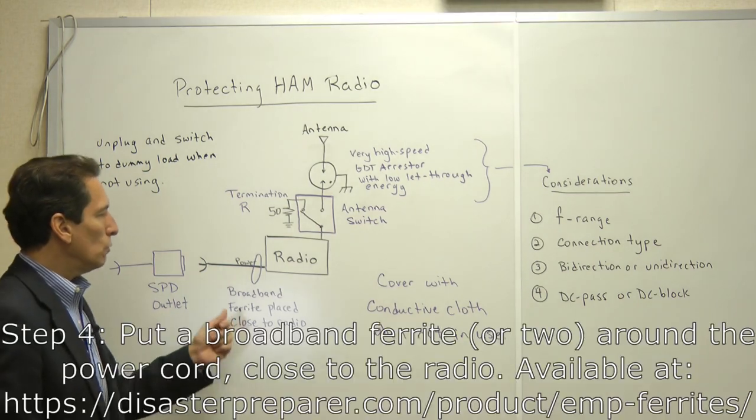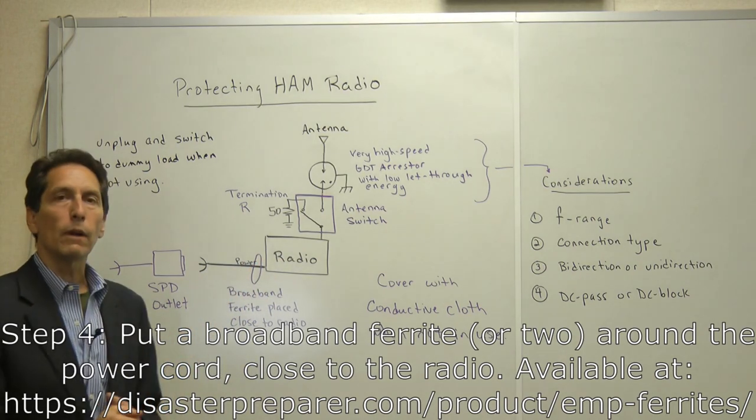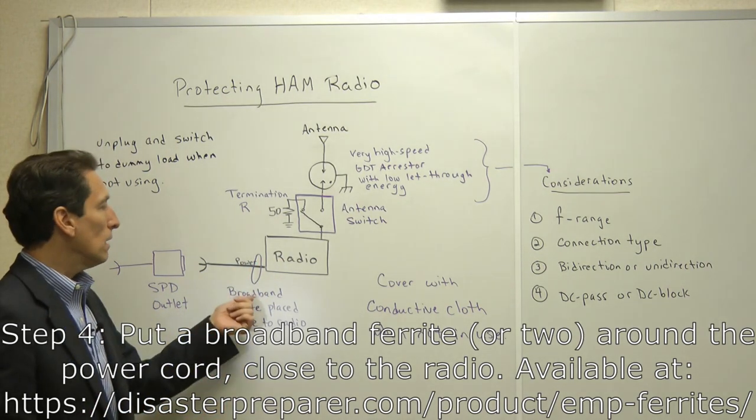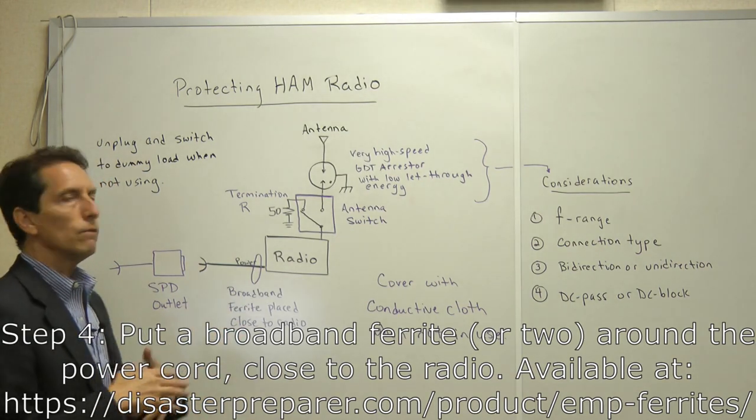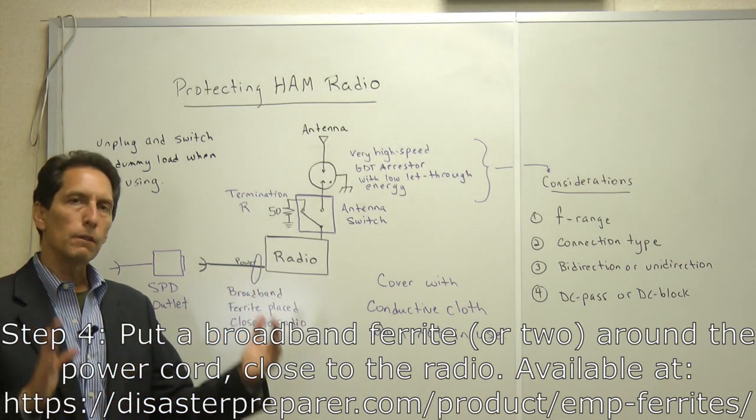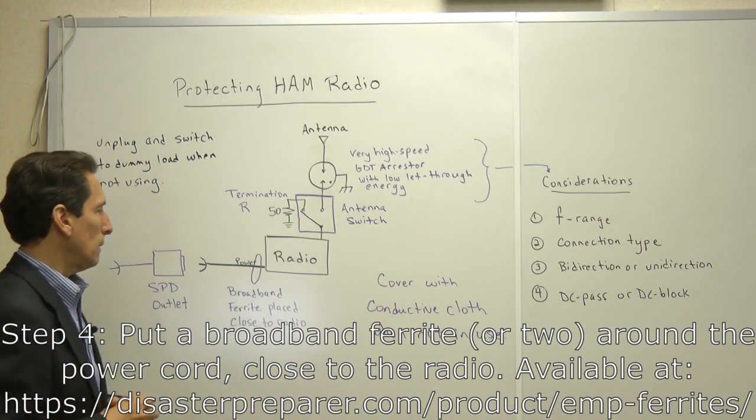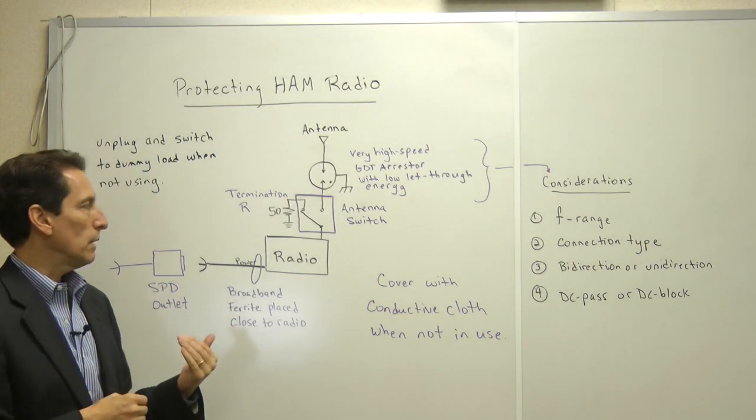The next thing you want to do is you want to take a broadband ferrite and you want to place it around the power cord as close to the radio as you can. Now we sell broadband ferrites at disasterprepare.com. I'll put a little link for them. But you can find them other places if you want. You just want to make sure that it's broadband and it covers the frequency range of an EMP. Again, close to the radio. And that does a very good job of protecting the power connection to the radio.